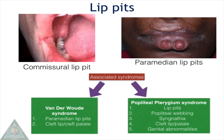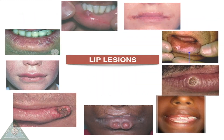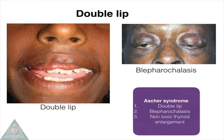The associated syndromes include Van der Woude syndrome and popliteal pterygium syndrome. Van der Woude syndrome comprises paramedian lip pits with cleft lip and cleft palate. Popliteal pterygium syndrome comprises lip pits, popliteal webbing, syngnathia, cleft lip and palate, and genital abnormalities. Double lip is a redundant mucosal fold found in the upper lip.